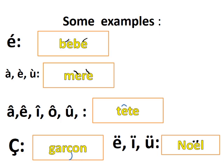Next one is Accent Grave — you put it on A, E, and U. So on both E's you are placing this accent. Next is Accent Circonflexe — you can see it on top of A, E, I, O, U. This small caret shape is called the Circonflexe.